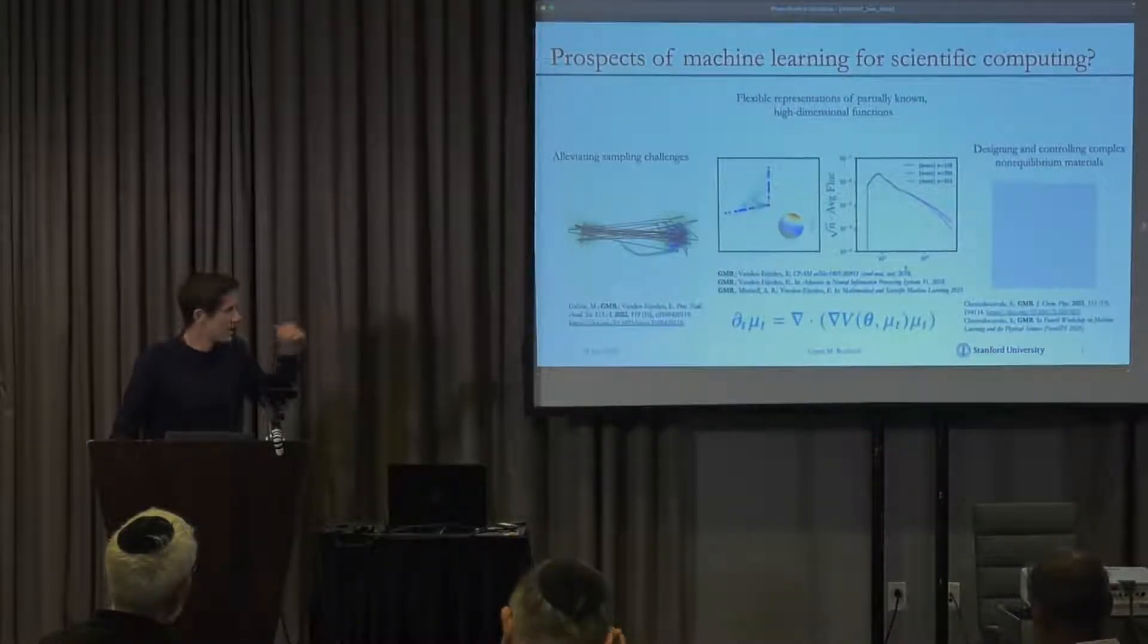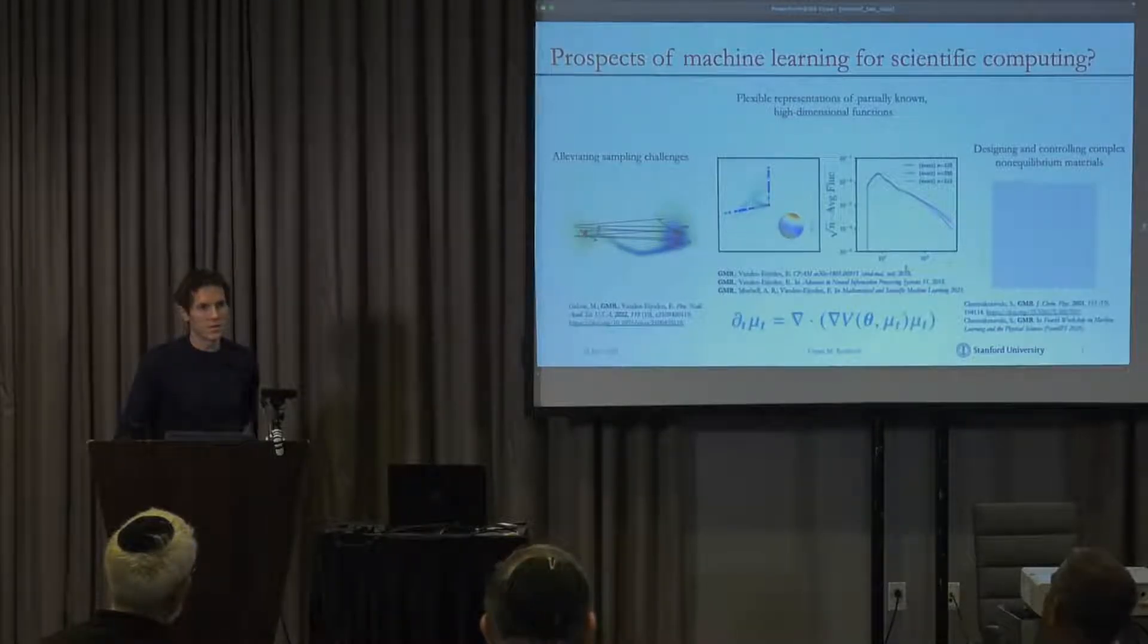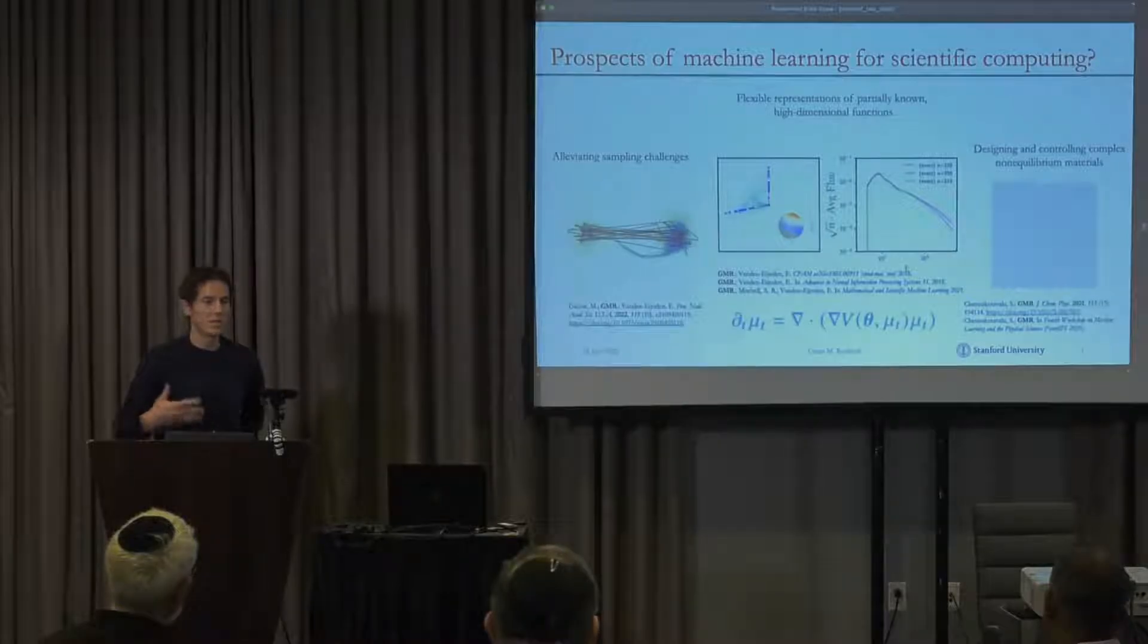Starting in 2018, Eric Vandeniden and I wrote a series of papers that tried to explain notions of trainability in terms of the dynamics of parameters, but rather than analyzing the individual values of the parameters themselves, we looked at it in a more distributional framework.